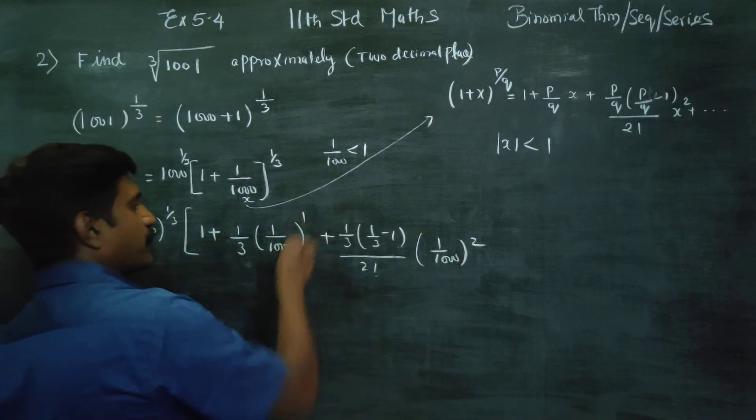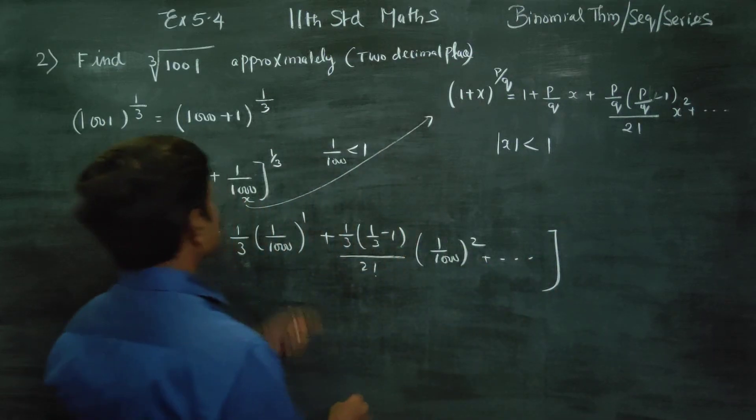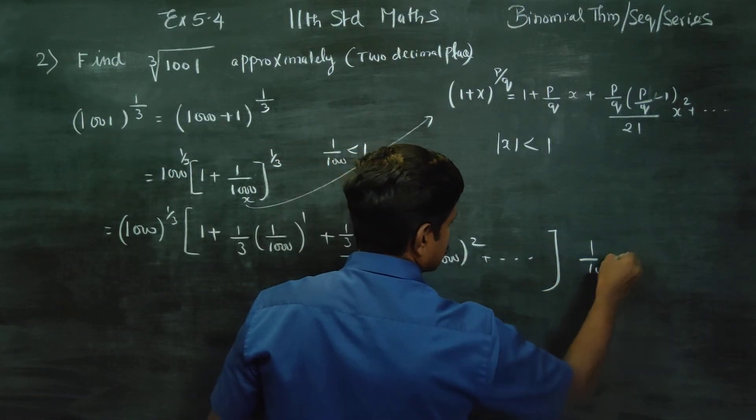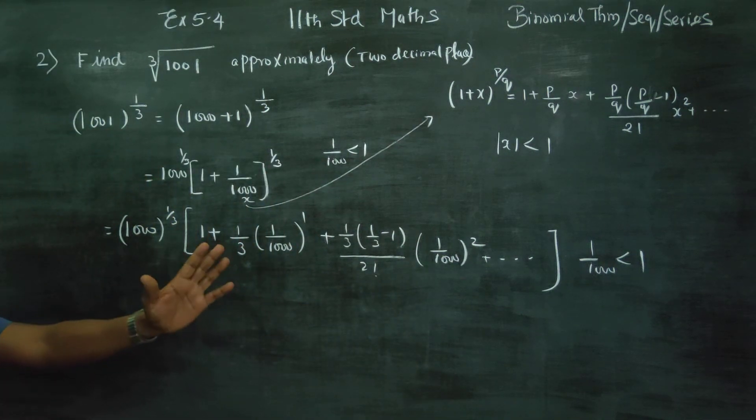And it goes on. This is my power 1, x power 1. And it goes on. Because 1 by 1000 is naturally less than 1.